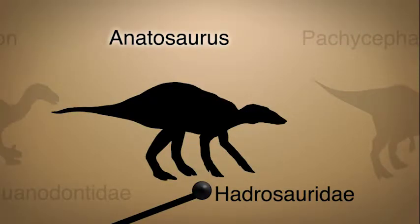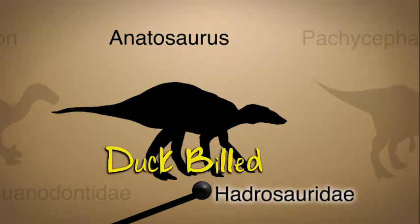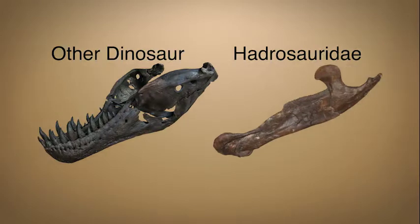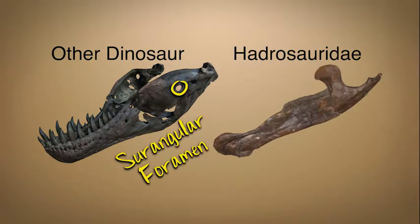Anadosaurus is a representative of the Hadrosauridae, or duck-billed dinosaurs, which are the next group on our cladogram. Hadrosauridae don't have the surangular foramen, a hole near the back of their jaws that was present in the dinosaurs we have already discussed.